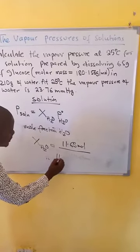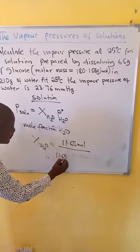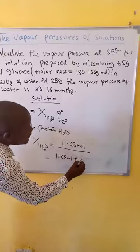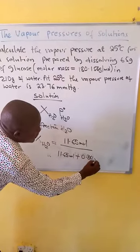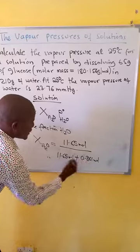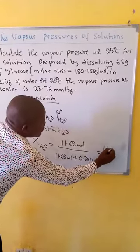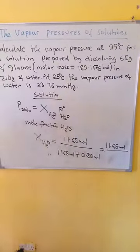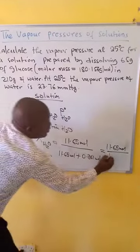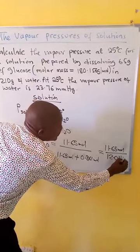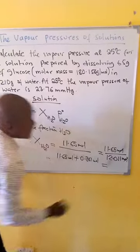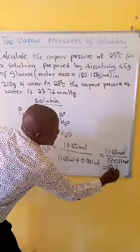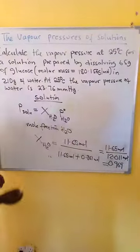So, we have moles of water, which is 11.65 moles, plus moles of glucose, 0.361 moles. So, we add, then we get 11.65 moles of water. The summation gives us 12.011 moles, then this will cancel. When we divide, we'll get 0.969. So, this is the mole fraction of water.